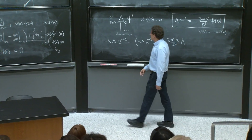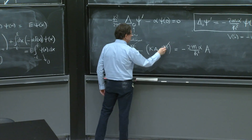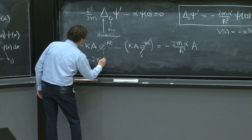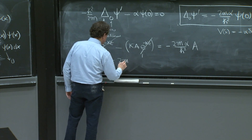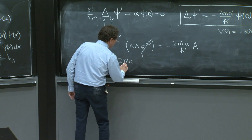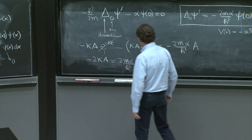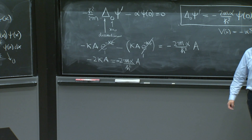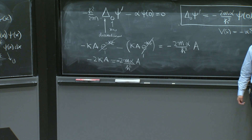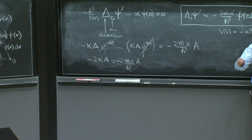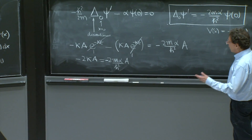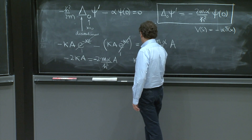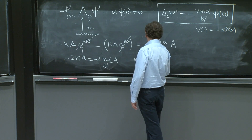We take the limit as ε → 0, so both exponentials go to 1. The left-hand side becomes -2κA, and the right-hand side is -(2mα/ℏ²)·A. The 2's cancel, A cancels — you should never expect to determine A unless you normalize the wave function; solving for energy eigenstates will never determine A since the Schrödinger equation is linear. So A drops out, the factor of 2 drops out, and we find: κ = mα/ℏ².